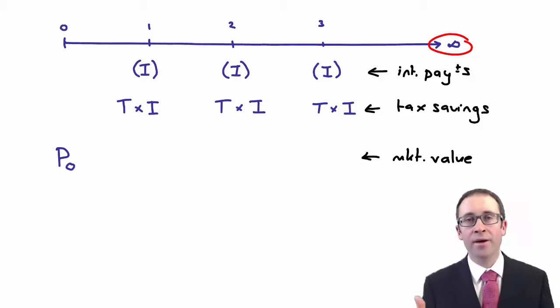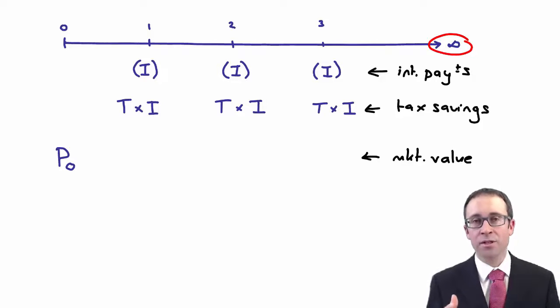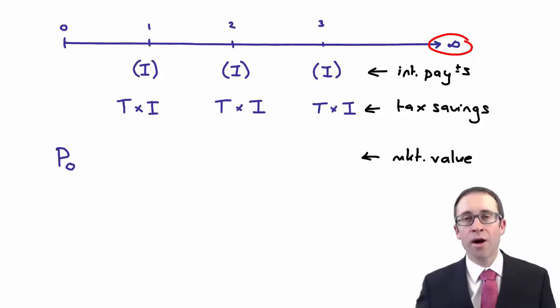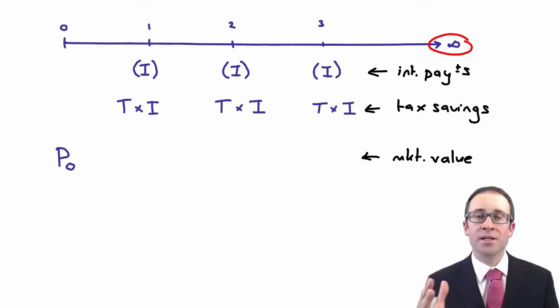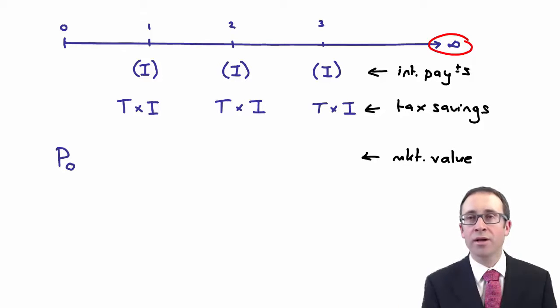What we need to do now is discount those cash flows at years one, two, three and right the way into infinity. Discount them back to present value at KD to work out the price. But we're not trying to work out the price because we know the price, the interest, and the tax rate. We're trying to work out KD.